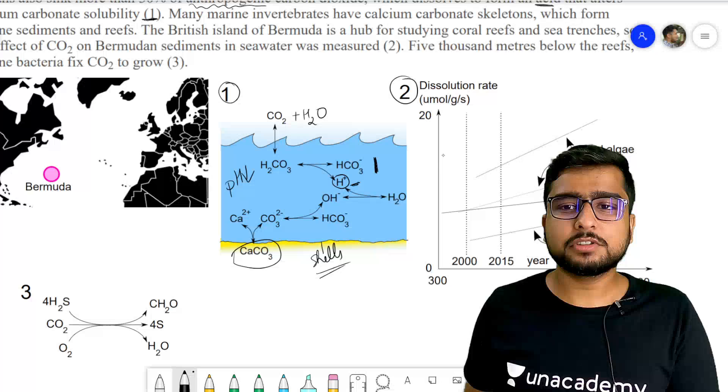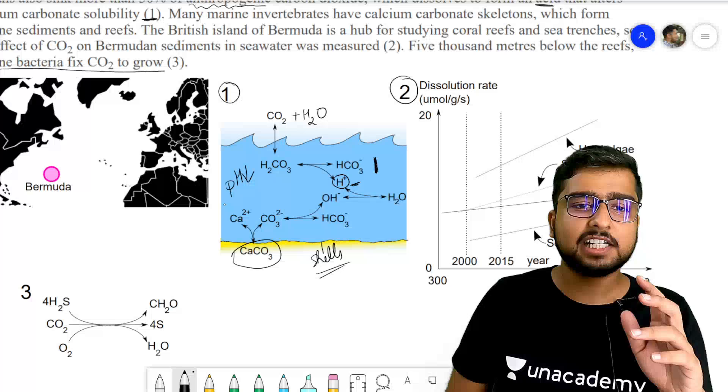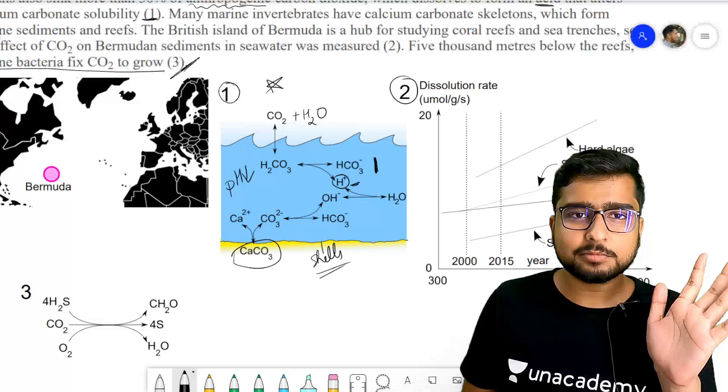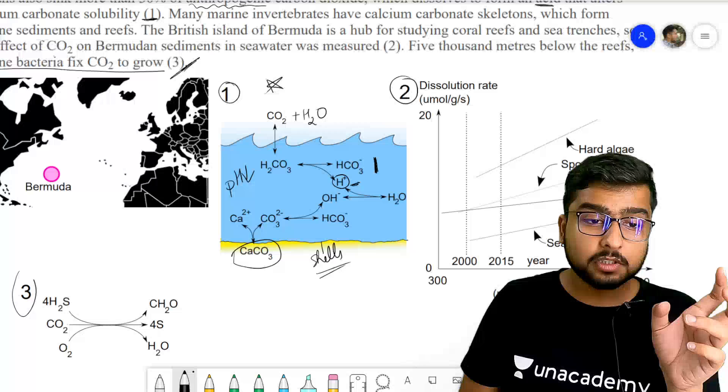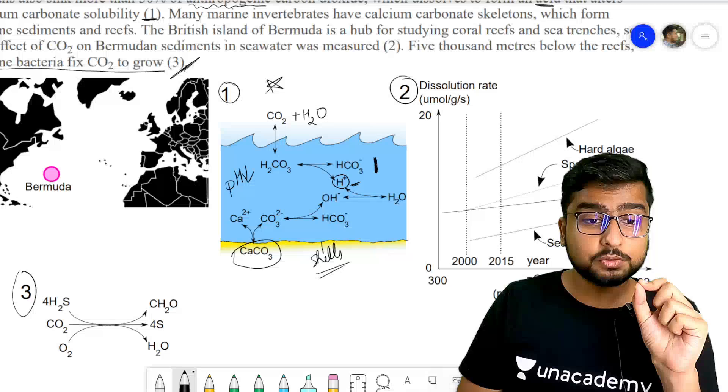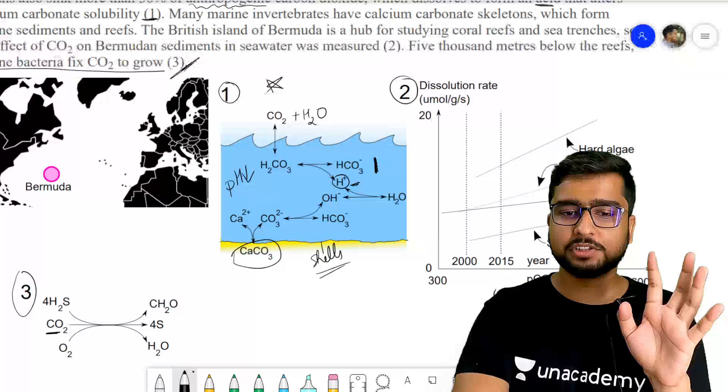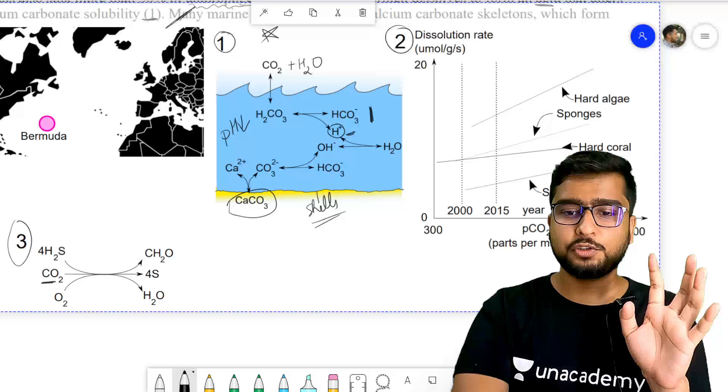Now, 5000 meters below the reef, last statement, marine bacteria fix carbon dioxide to grow. Toh inhone ek saath aapko teen information di. How CO2 ka dissolution changes the calcium carbonate. What is the effect of this on the dissolution rate of the skeletons? And the third is ki, itna niche, beyond the sea level, marine bacteria CO2 ko kaise fix karte hai. Toh aapko kai saare information, teen pieces of information di diya gaya hai Bermuda ke baare mein.